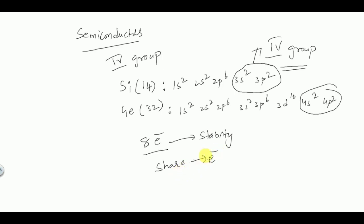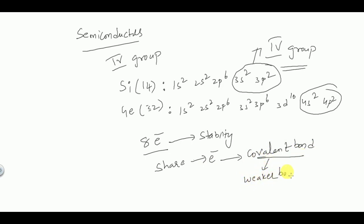Valence electrons are shared by two adjacent atoms of the semiconductor. Such a bond where sharing of electrons takes place is called a covalent bond. These covalent bonds are very weak bonds and can be easily broken when an external force is applied. When that happens, all the valence electrons will become free and are ready for current conduction.